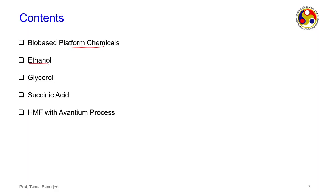We will cover: ethanol, glycerol, succinic acid, and HMF — hydroxymethyl furfural. For HMF, we will see the conventional scheme and the improved scheme with the Avantium process, and we will see both of them together.